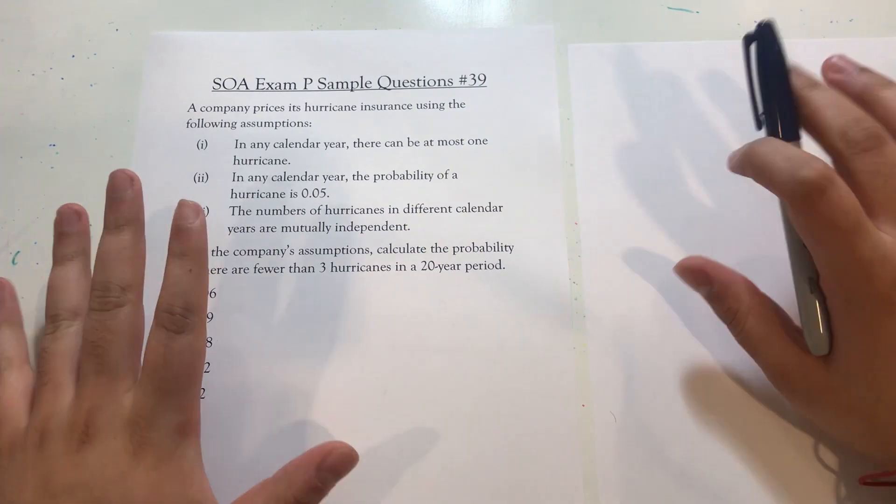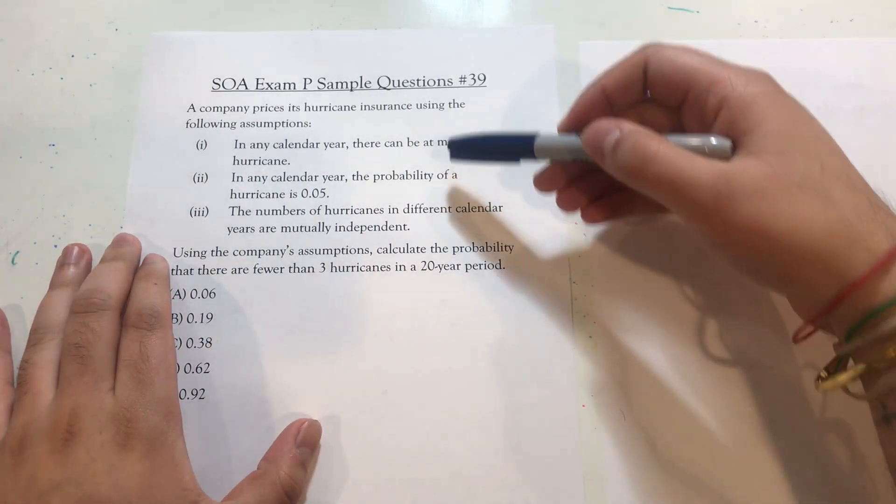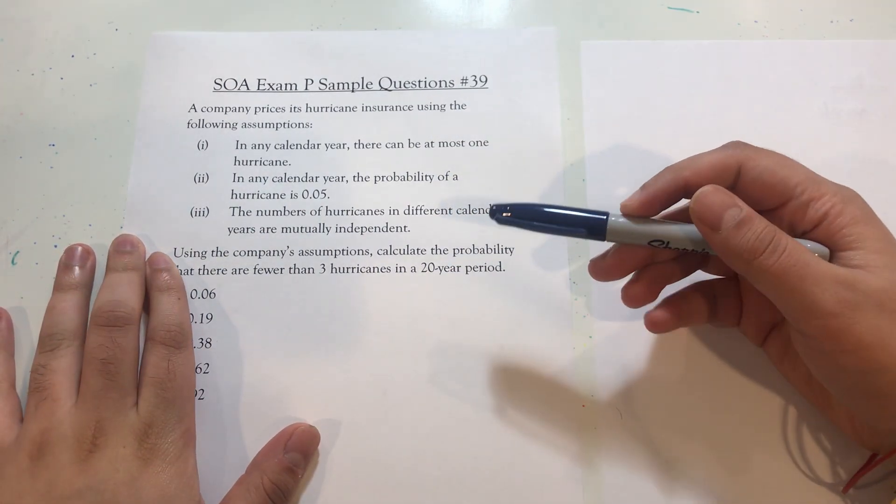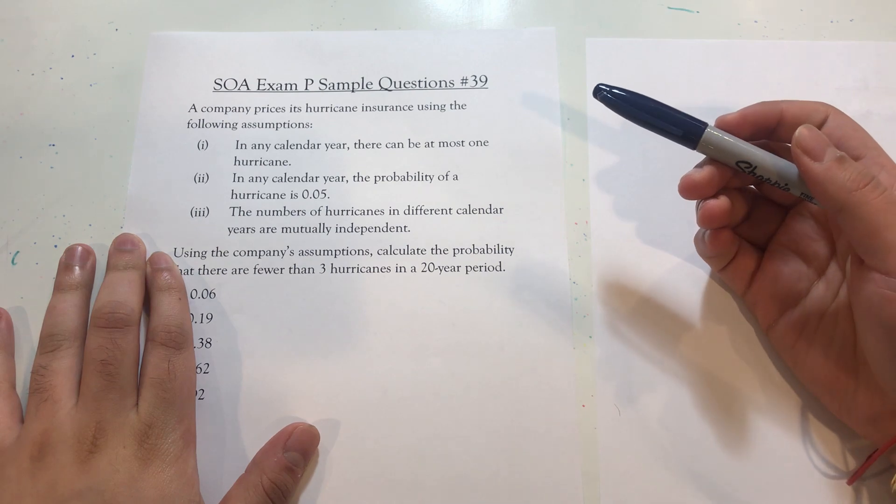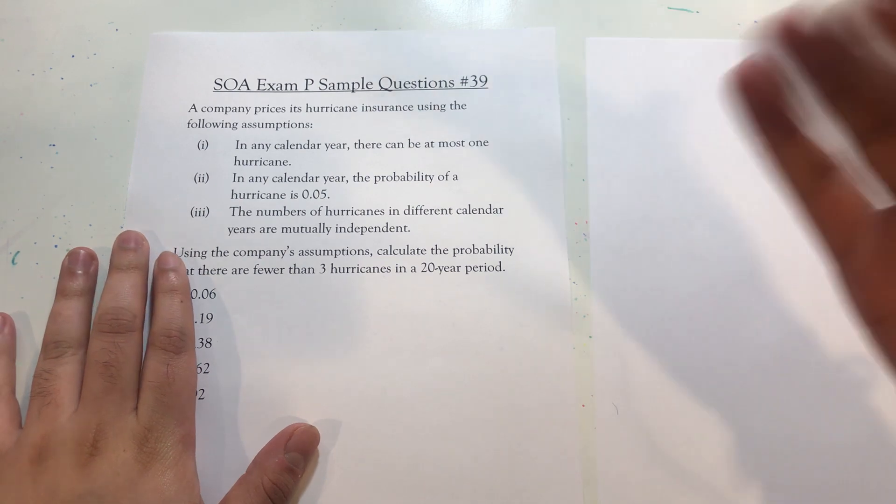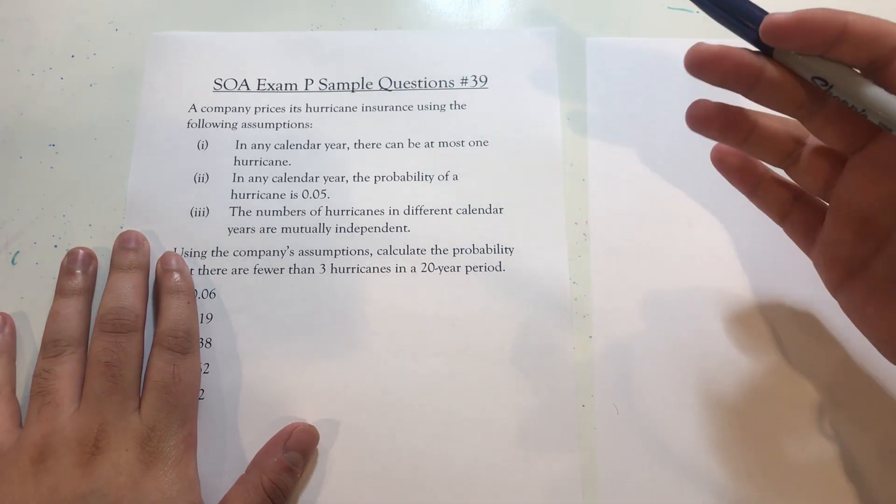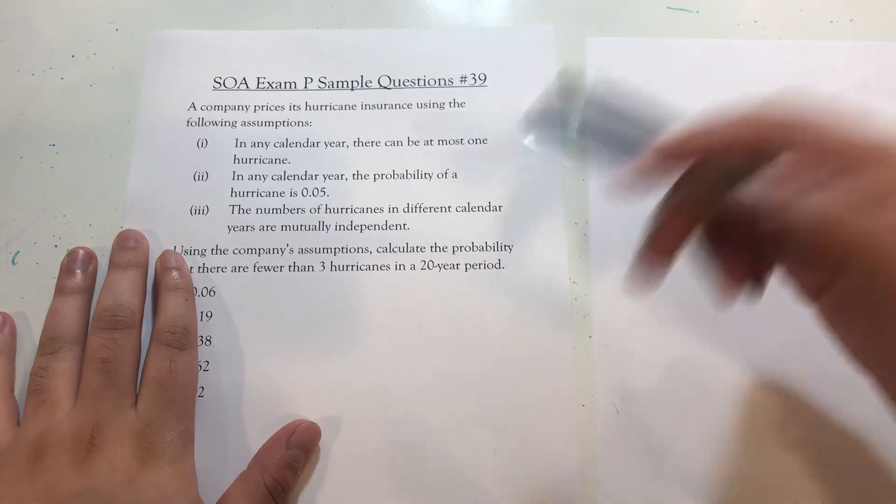Okay, so this is a super easy question. These assumptions they gave here essentially are a checklist for seeing whether you're dealing with a binomial random variable. You either have a pass or fail. There is a hurricane or there isn't.